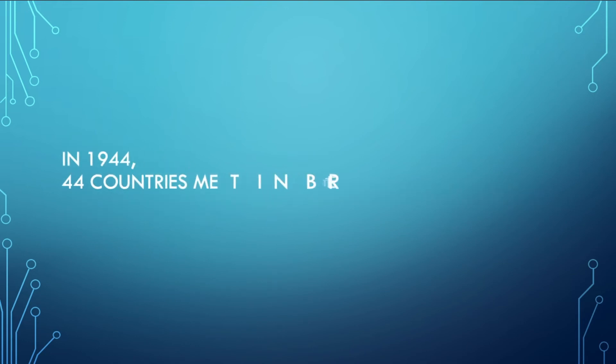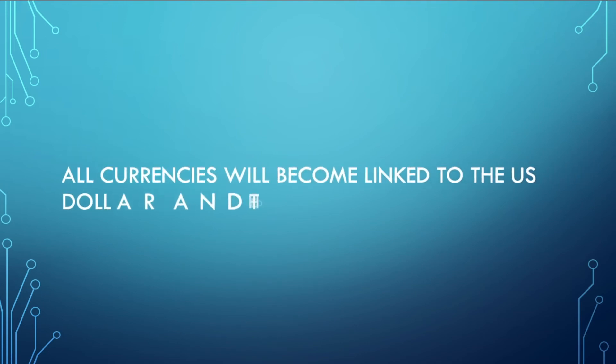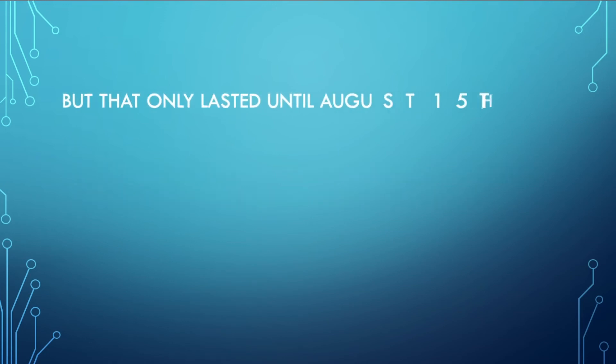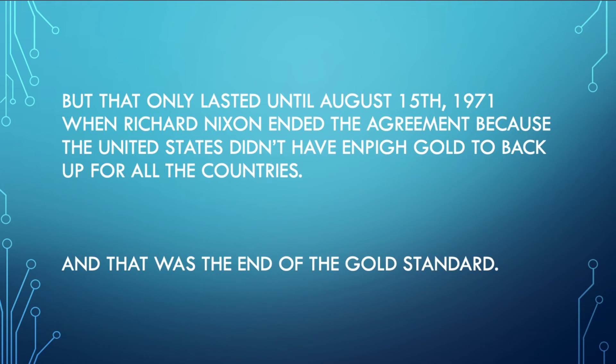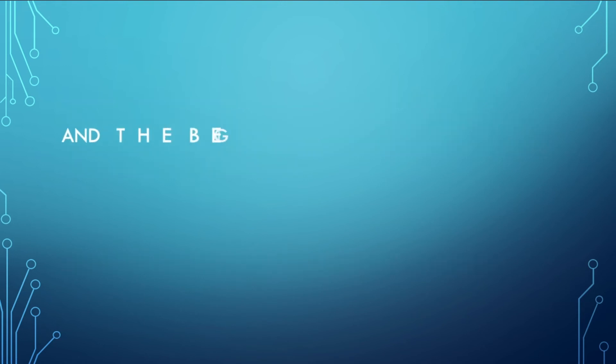In 1944, 44 countries met at Bretton Woods and made a decision. All currencies will become linked to the US dollar and the dollar linked to gold. But that only lasted until 1971 when Richard Nixon ended the agreement because the United States didn't have enough gold to back up for all the countries. And that was the end of the gold standard and the beginning of fiat money.